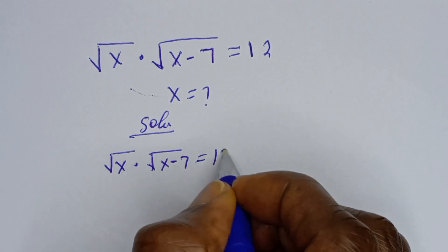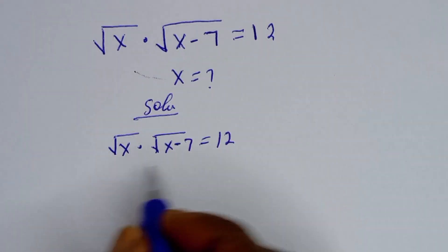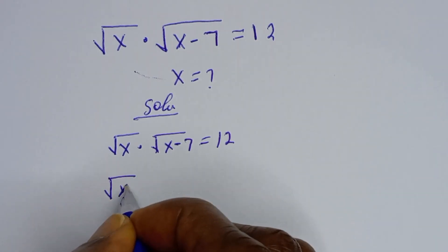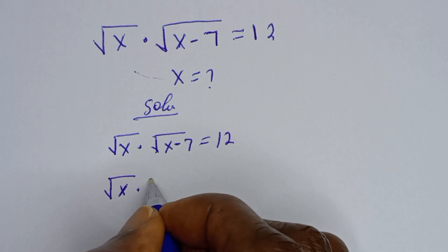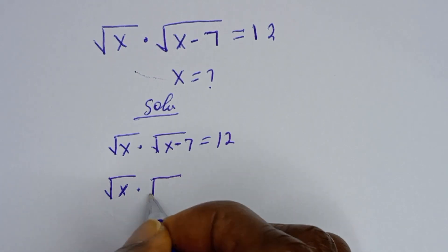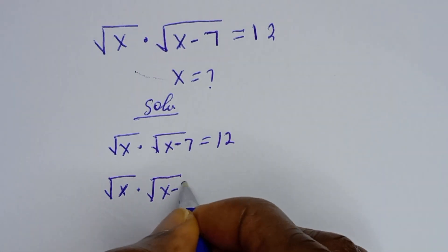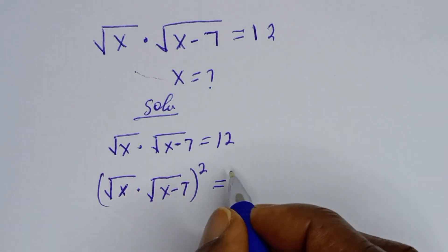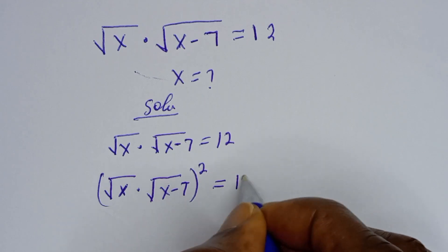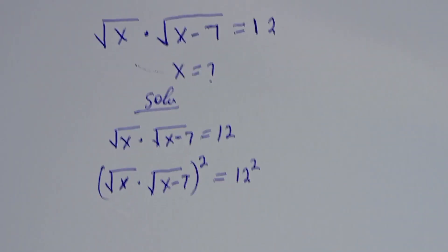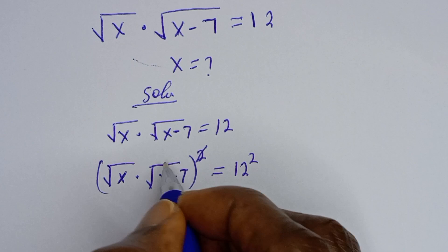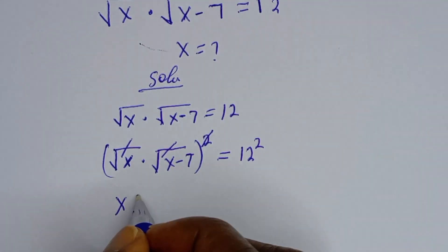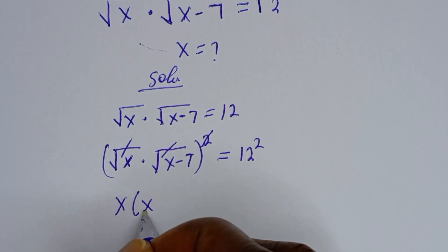Let's square both sides of this equation. Square root of s multiplied by square root of s minus 7, all squared, is equal to 12 squared. This will cancel, giving us s times the bracket s minus 7.